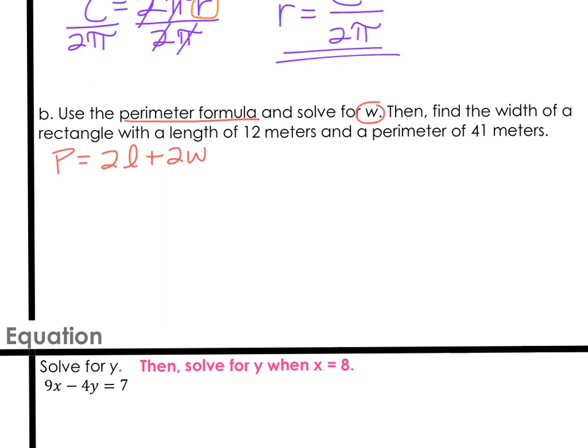Our plan is to isolate the W. We need to get this part by itself. I'd like to start by moving the 2L to the other side, and we'll do subtraction to make that happen.